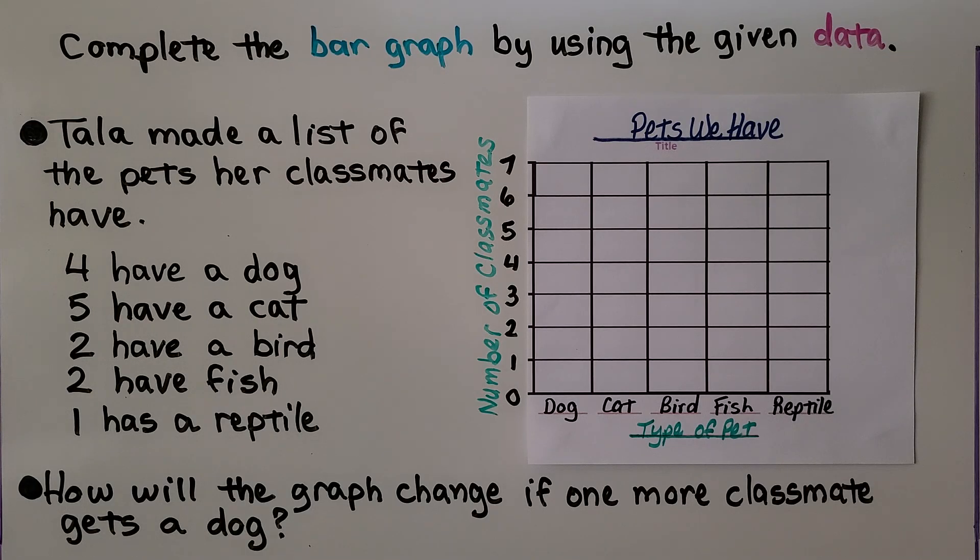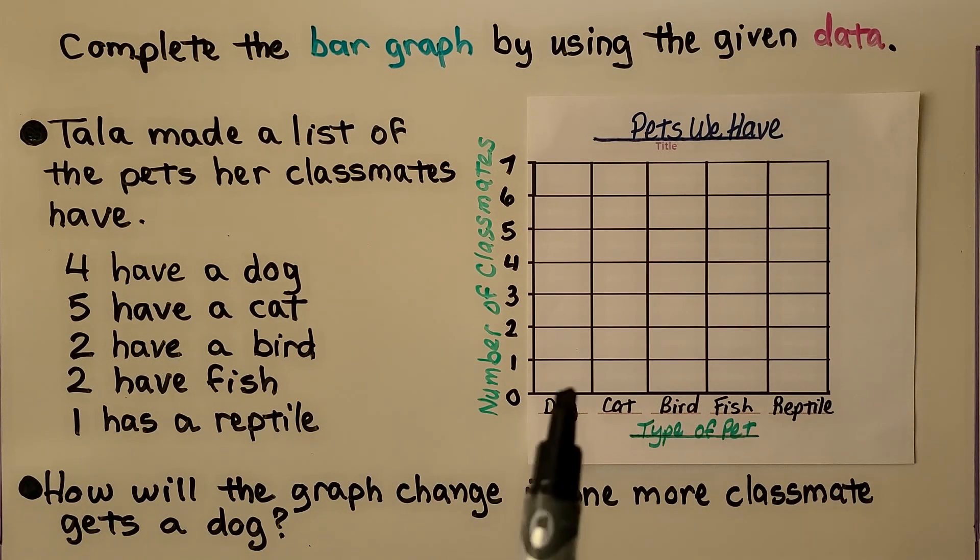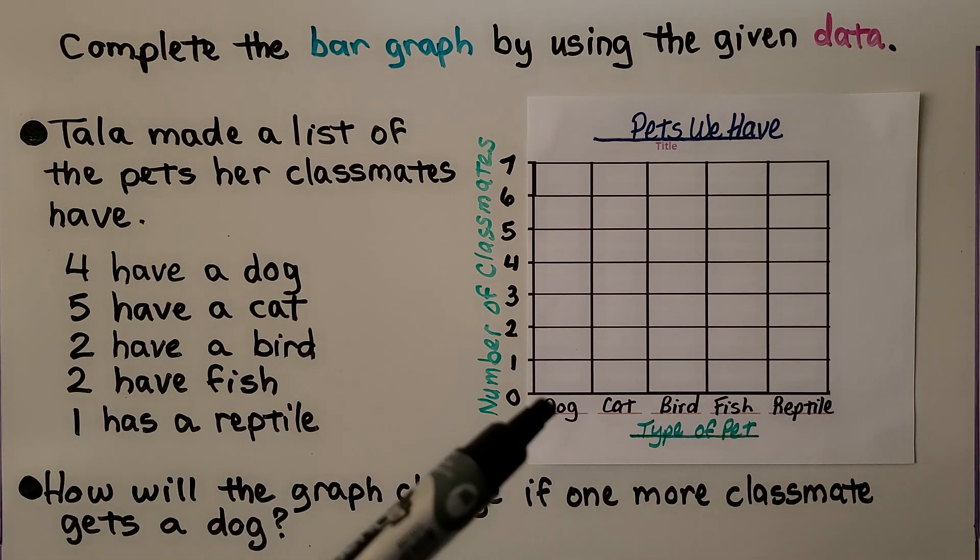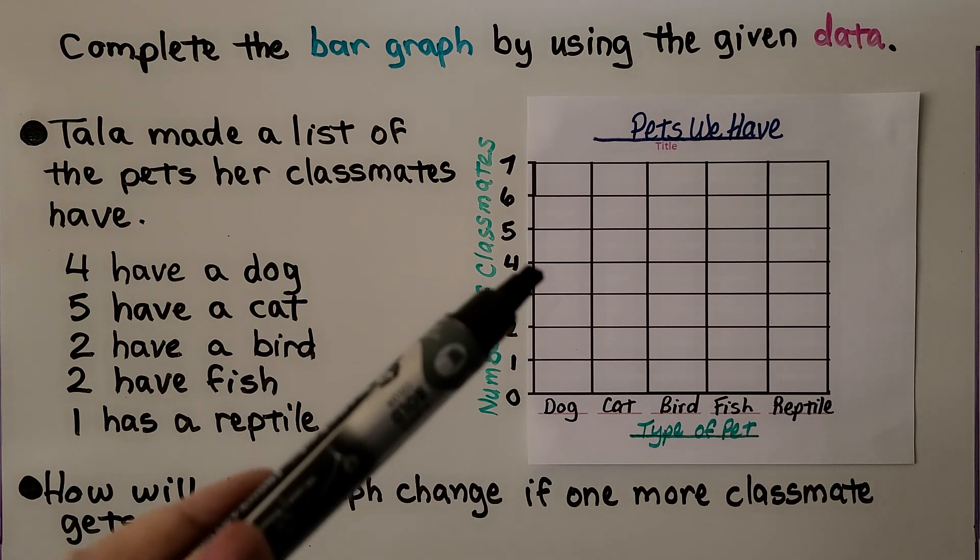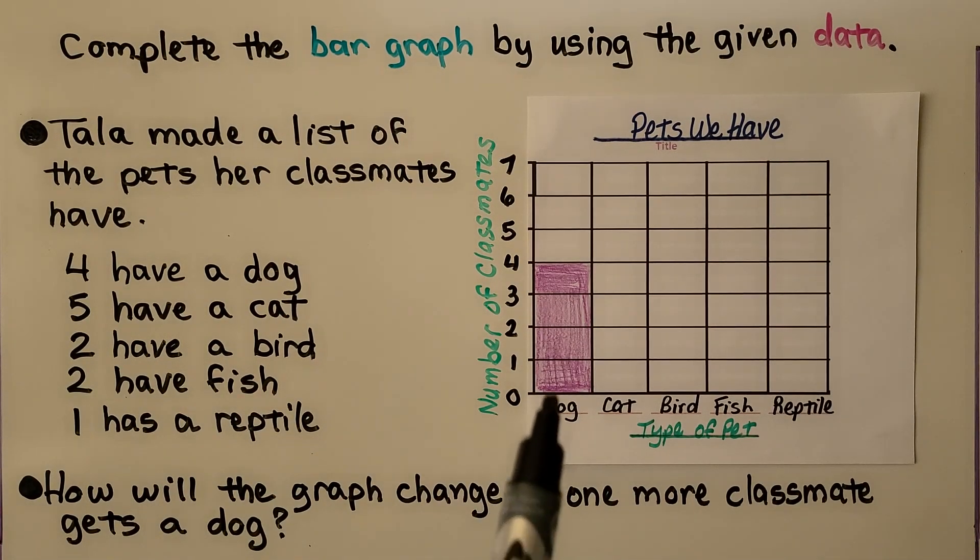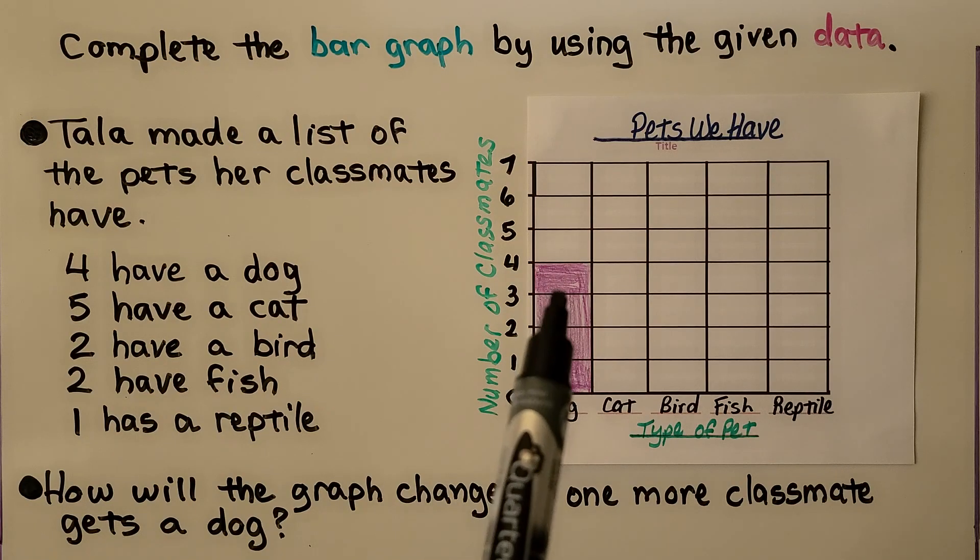We need to draw the bars. We can choose any color we want as long as we choose different colors for each bar. Four have a dog, so for the dog column we are going to draw it up to four. We choose a color and we color it up to the number four on the scale.